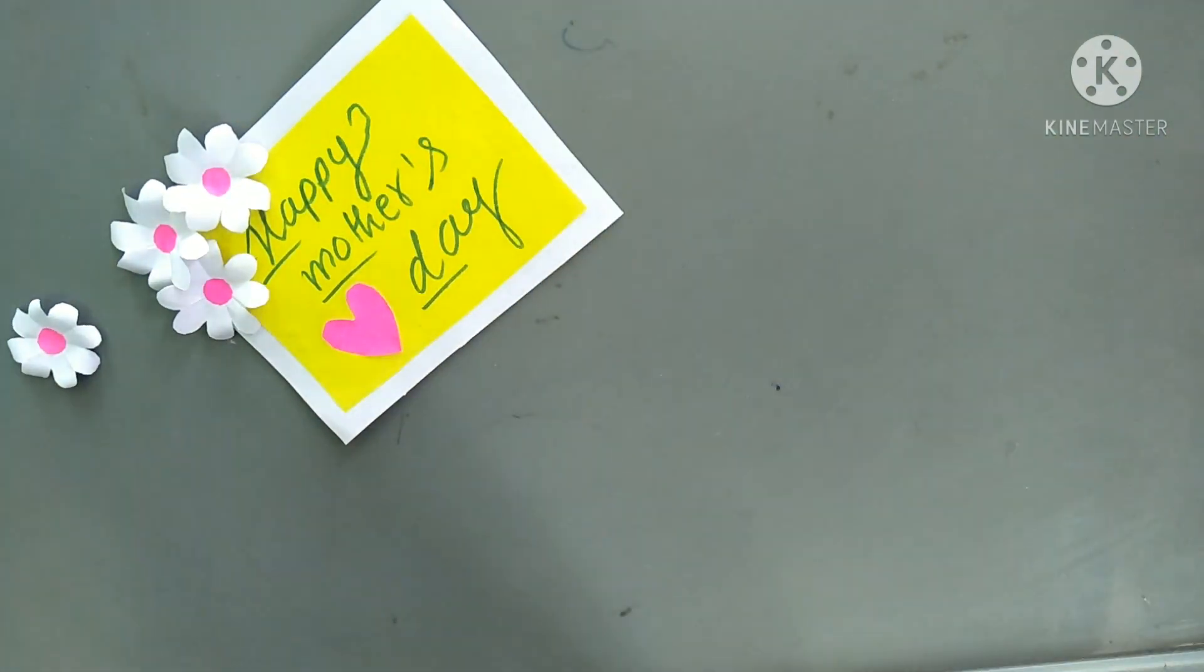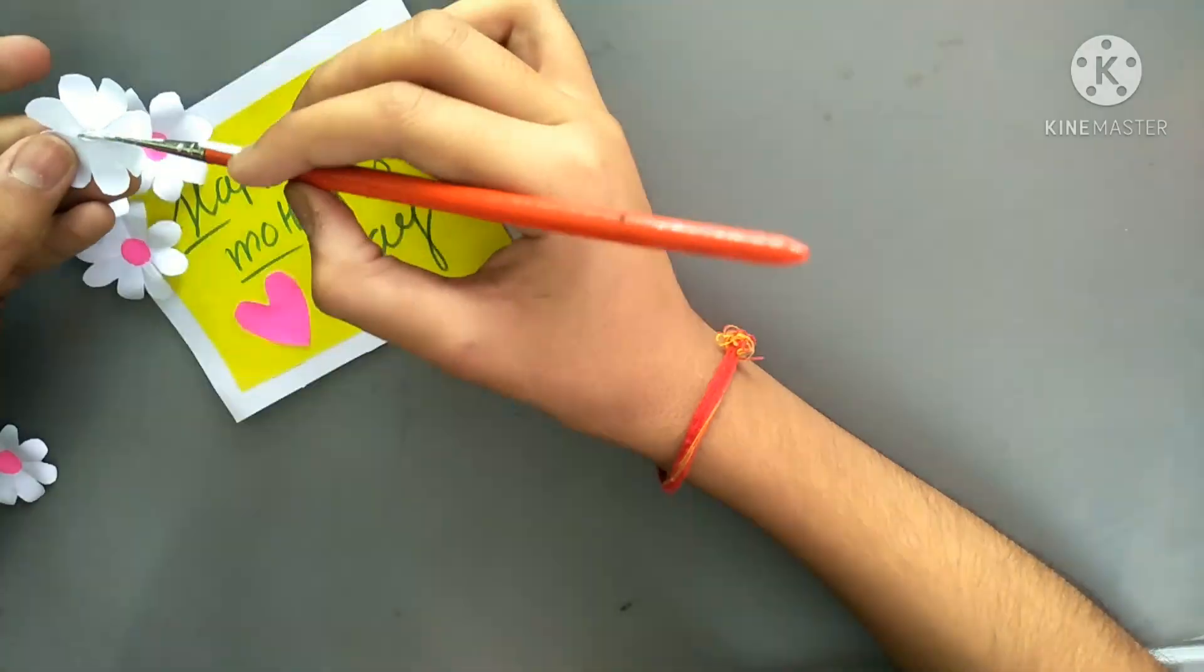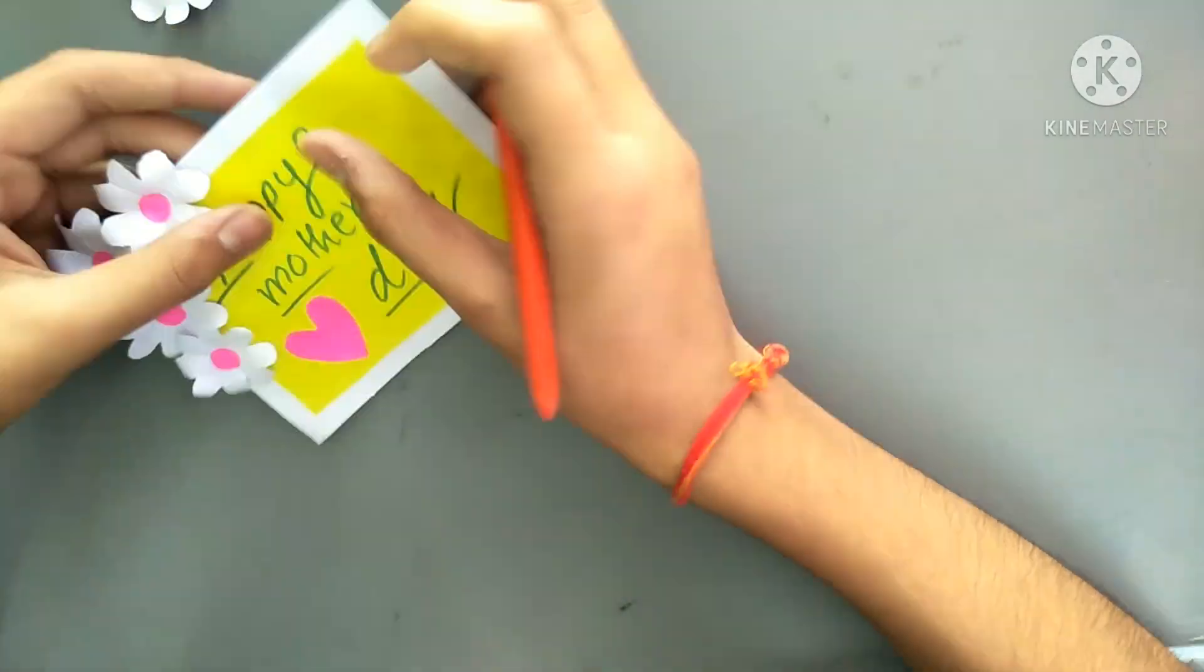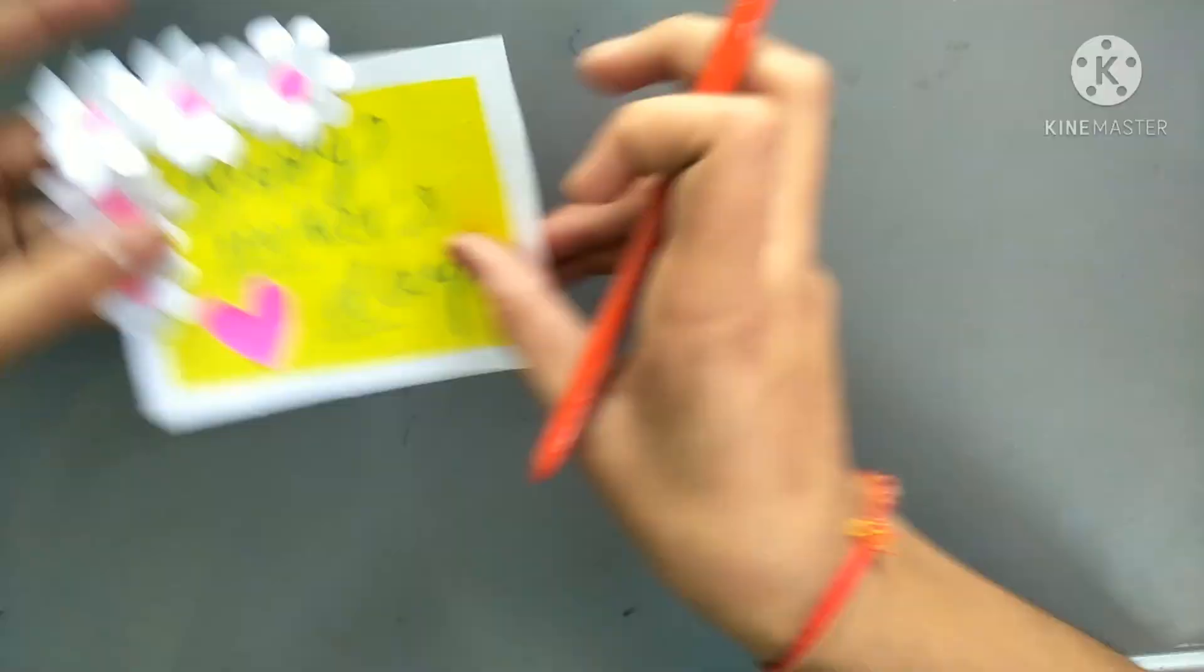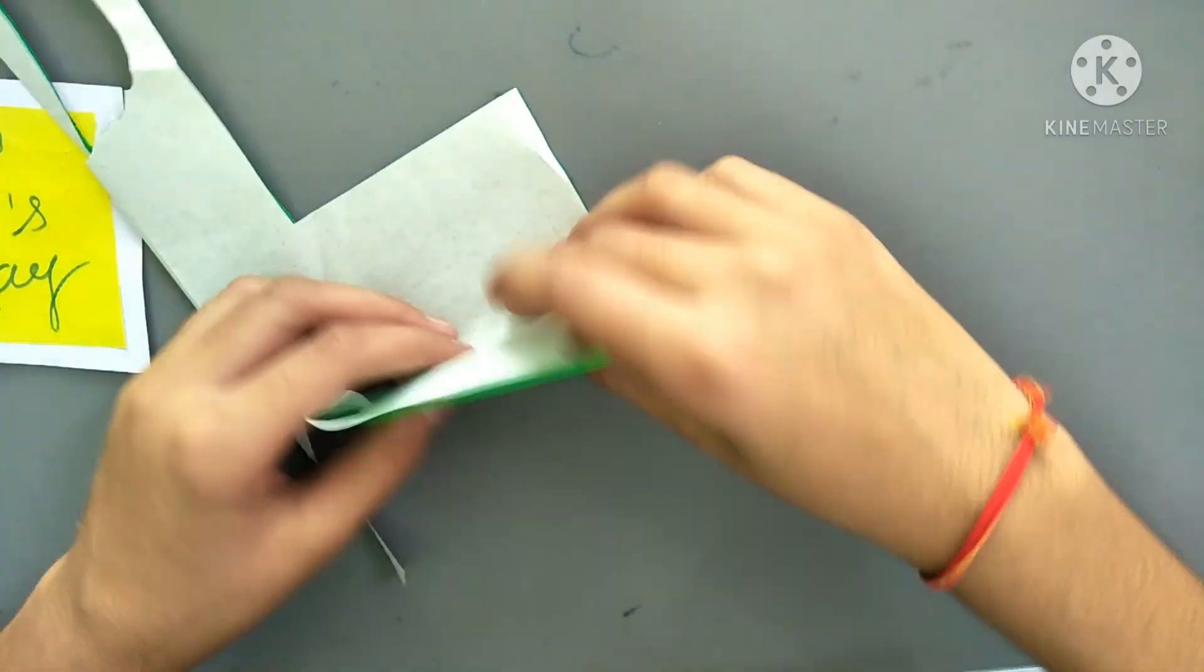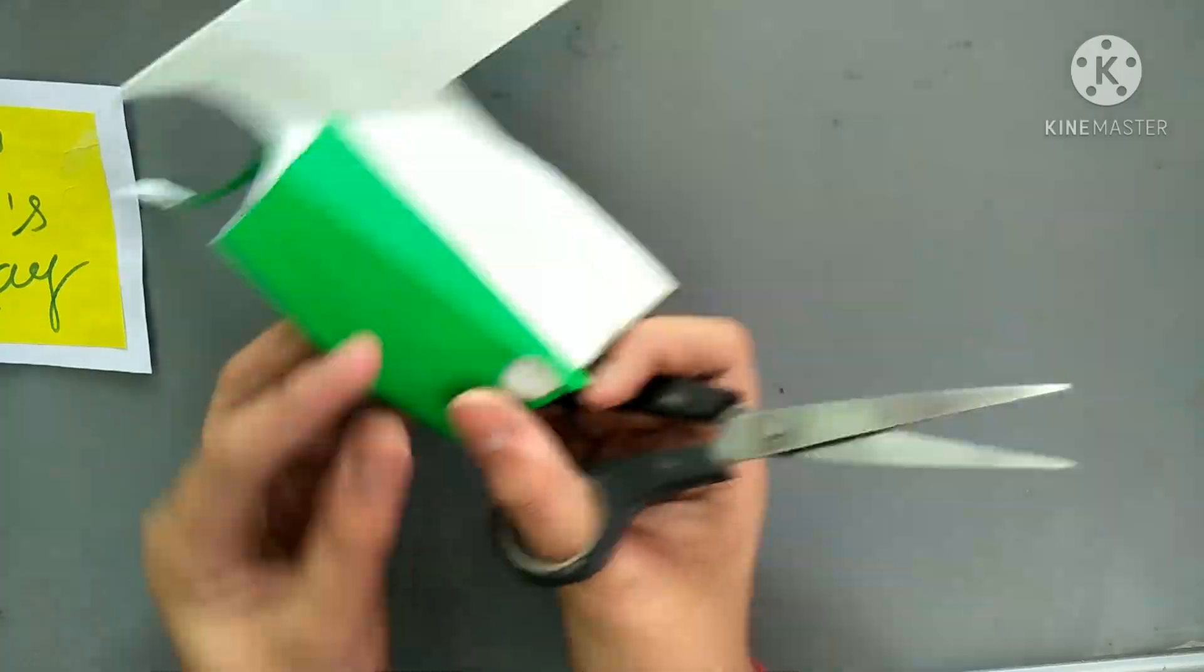Just paste the flowers. It will give you a very beautiful look. Now follow as I am doing. Take a green sheet of paper and make leaves from it. Just follow as I am doing in the video.